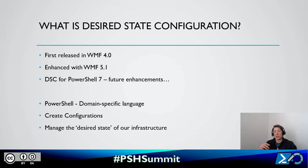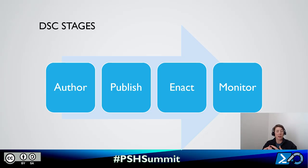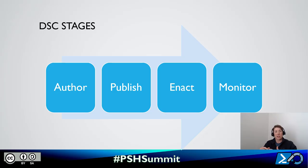With Desired State Configuration, we have the idea of creating configurations that describe the desired state of our environment. There are really four stages of DSC. We have the authoring stage, where we write our configurations describing our desired state. We then publish those configurations out to our target nodes. That'll be enacted — the 'make it so' phase. And then finally we'll monitor, making sure our environment stays in the desired state and that we're not experiencing any configuration drift.